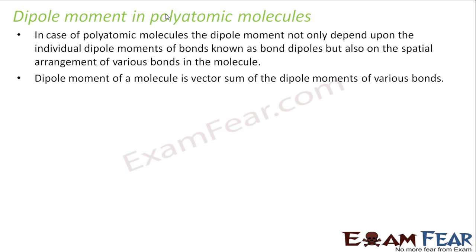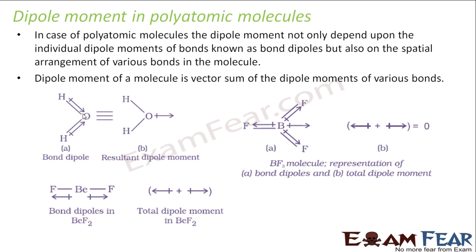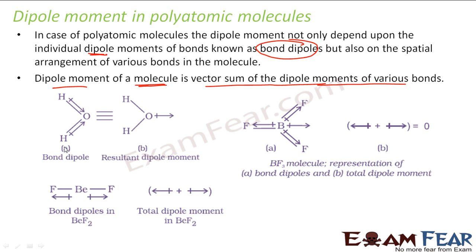The dipole moment of a molecule does not depend only on individual bond dipoles — it is the vector sum of all the bond dipoles in the molecule. For example, in H₂O, Hydrogen gets partial positive charge and Oxygen, being more electronegative, gets partial negative charge. There is a dipole from each O–H bond, and the net dipole is their vector sum. In BeF₂, Fluorine is more electronegative, so each Fluorine gets a slightly negative charge and Beryllium gets a slightly positive charge — but the net dipole is zero because the two bond dipoles cancel each other.